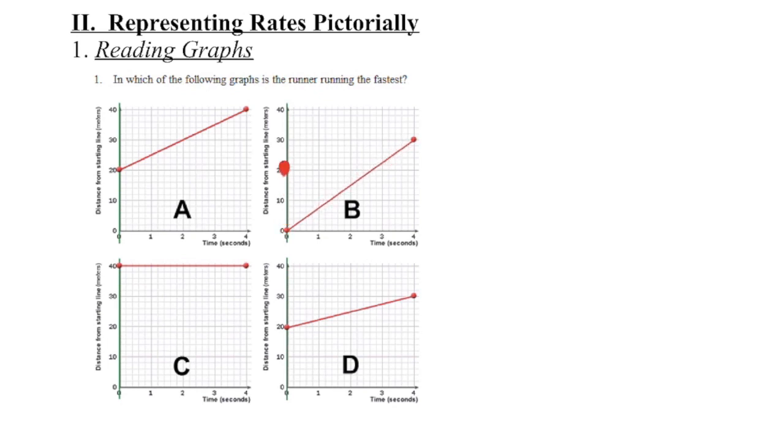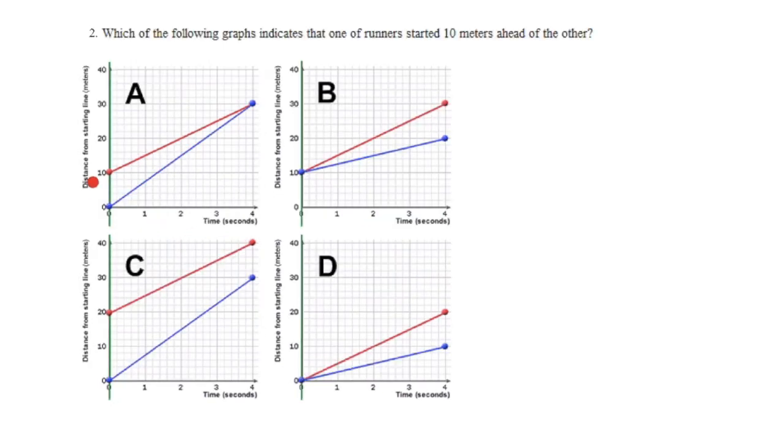Keeping with the same example, we're comparing the distance a person is from the starting line in meters to the time in seconds. And this time we want to figure out which one of the runners began 10 meters ahead of the other.